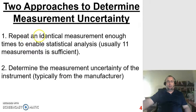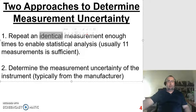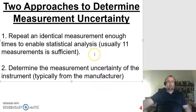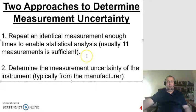Going back to the first approach, the key word is identical. Identical measurements means the same person taking the same measurement on the same system with the same device in a very limited span of time — ensuring the system and environmental conditions are not changing. If the measurements are not identical, this entire process is invalid. As for how many measurements you need: typically at least 10 to get a statistically meaningful population. For engineering purposes, we'll use at least 11 measurements, which is sufficient to run the needed statistical analysis to calculate experimental uncertainty.